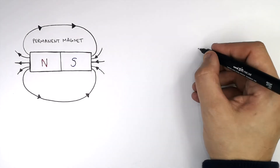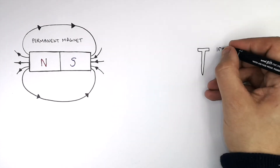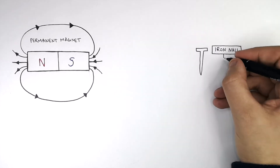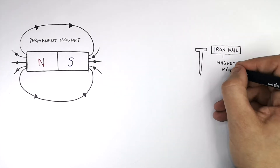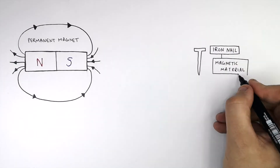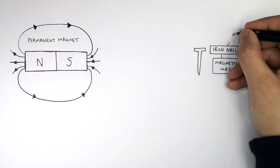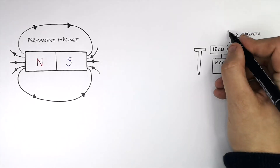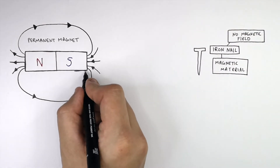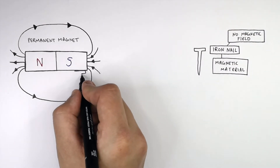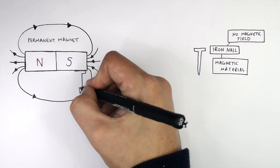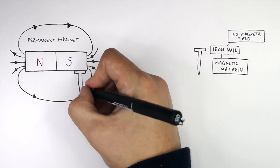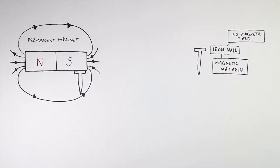This here is an iron nail. An iron nail is made of iron, which is a magnetic material; however, it has no magnetic field in itself. What we're going to do here is place the iron nail in the magnetic field of the permanent magnet.